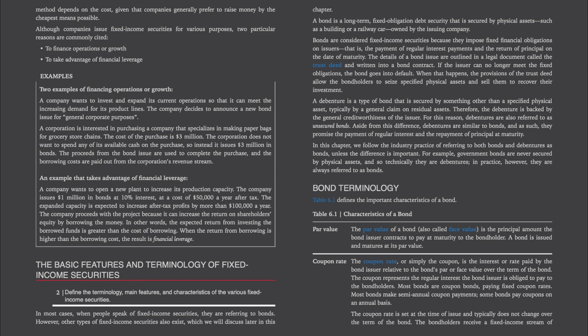Bond terminology — Table 6-1 defines the important characteristics of a bond. Par value: also called face value, this is the principal amount the bond issuer contracts to pay at maturity to the bondholder. A bond is issued and matures at its par value. Coupon rate: the interest rate paid by the bond issuer relative to the bond's par or face value over the term of the bond. The coupon represents the regular interest the bond issuer is obliged to pay to bondholders.